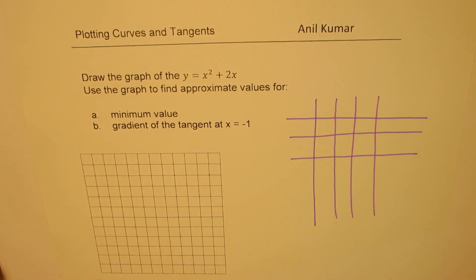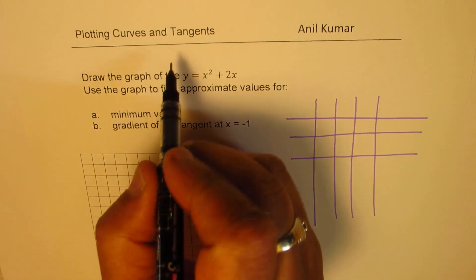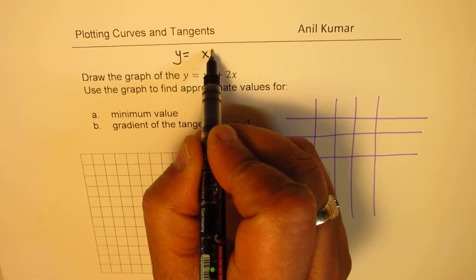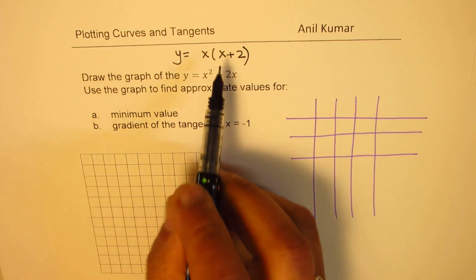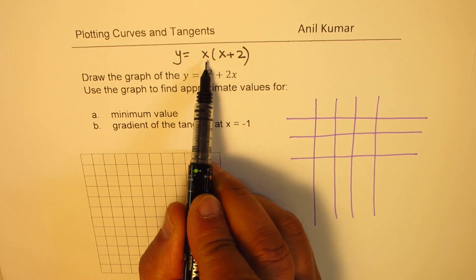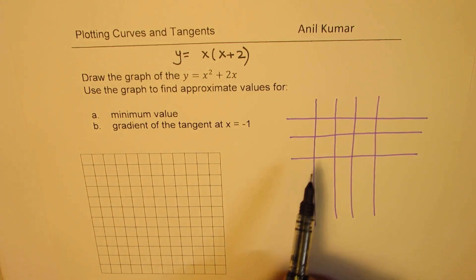Now how to select values is also an important thing. You can think about writing this equation as y = x(x + 2). So clearly, we do see that the graph will have two x-intercepts, one at 0, one at -2. So -2 and 0 are definitely good points to consider.